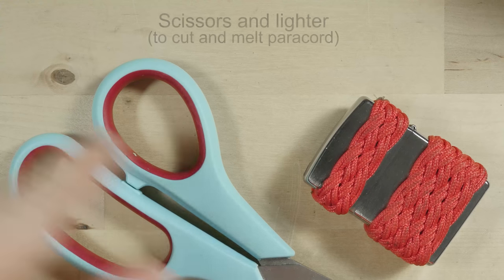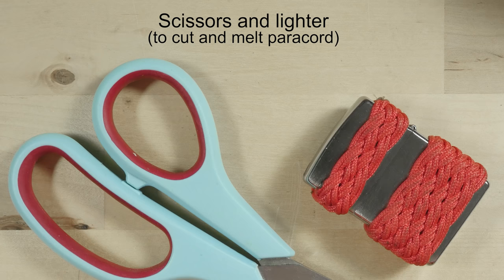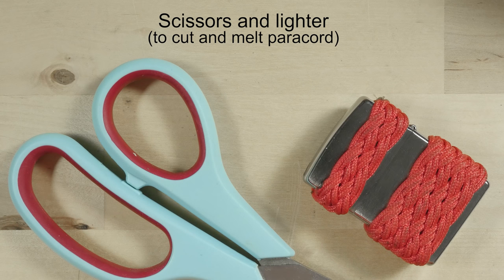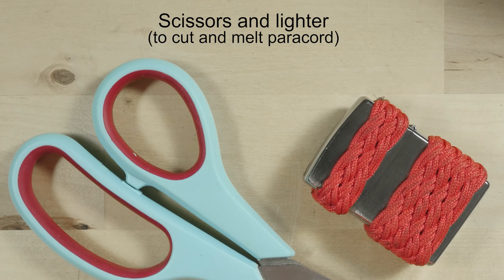Finally, scissors and a lighter are going to be used to cut and melt our cords. So let's tie a couple of pool paddies.